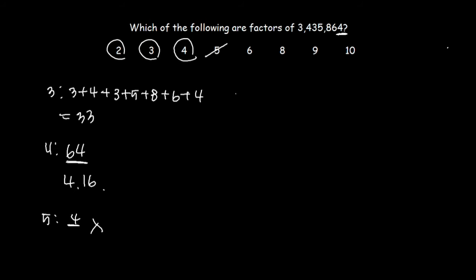Let's look at 6. If the number is divisible by 2 and 3, the number is going to be divisible by 6. We have already figured out that this number, 3,435,864, is divisible by 3. We also know it's divisible by 2. So it has to be automatically divisible by 6. 6 can be one of your answer choices.